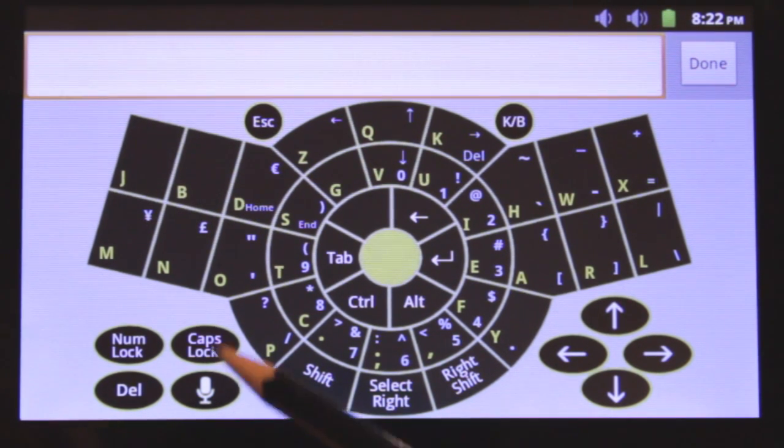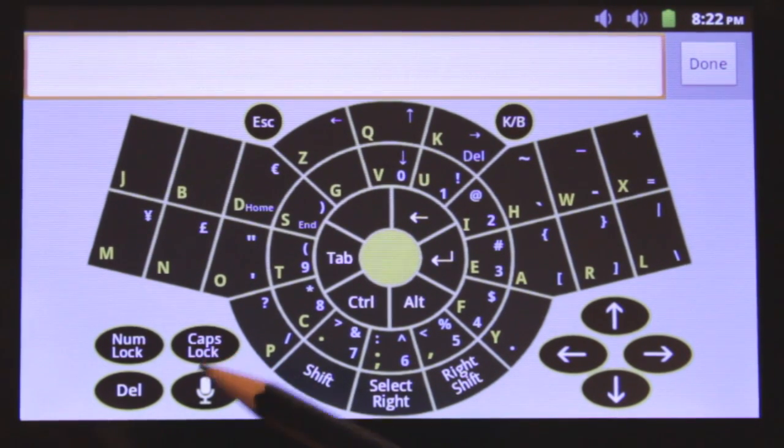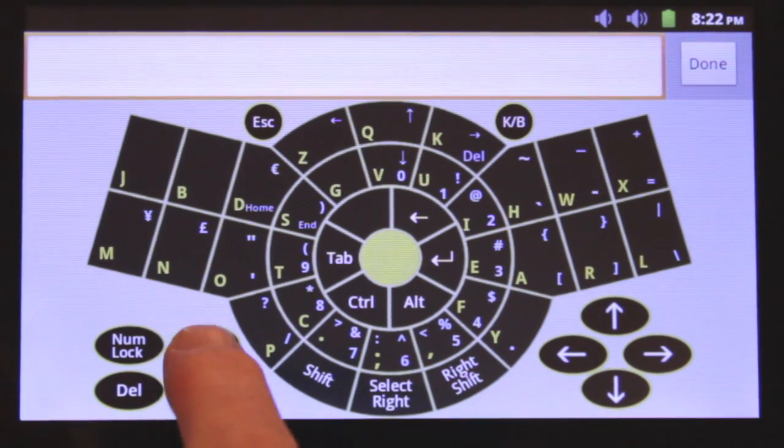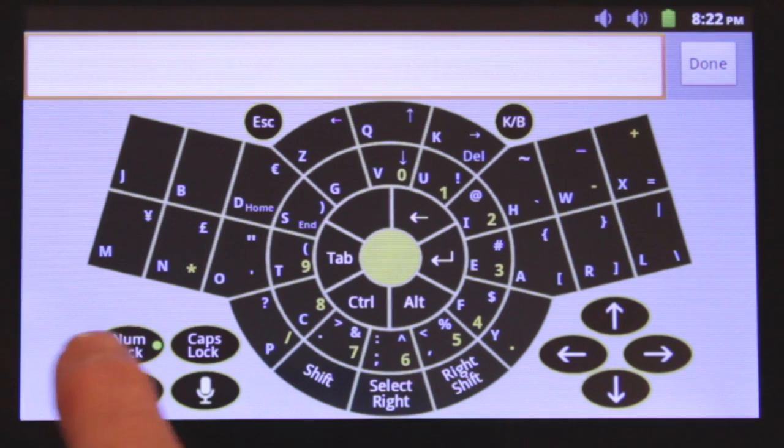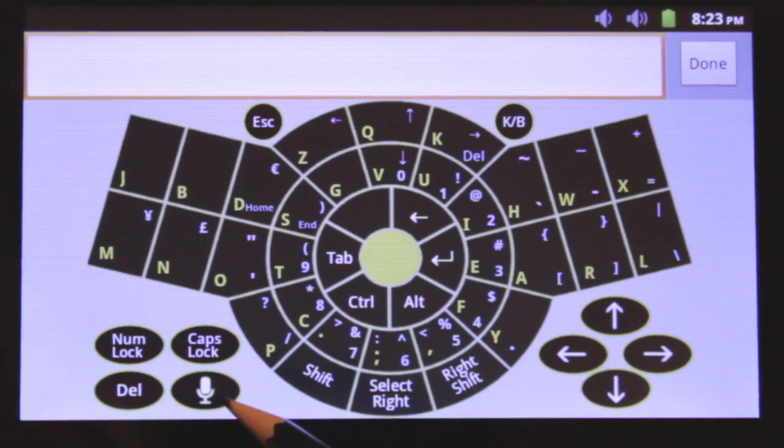On the bottom left of the keyboard layout are four additional keys. The caps and num lock keys operate as expected and each have their own active LED indicator. A separate delete key is also provided along with a microphone style icon.